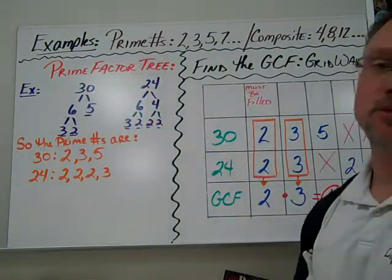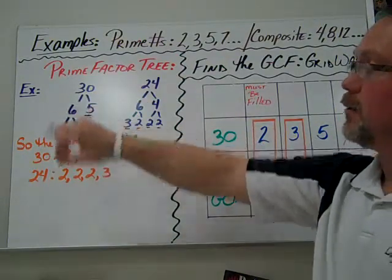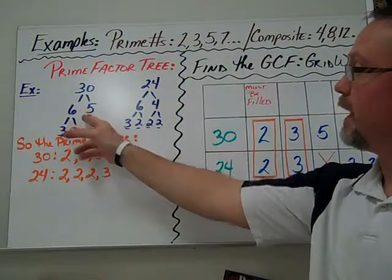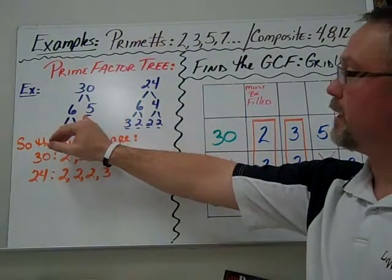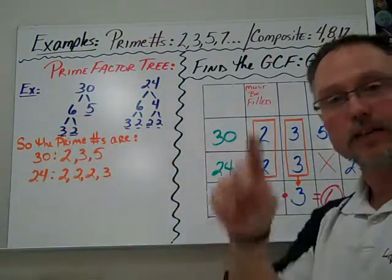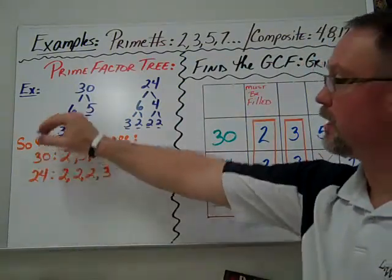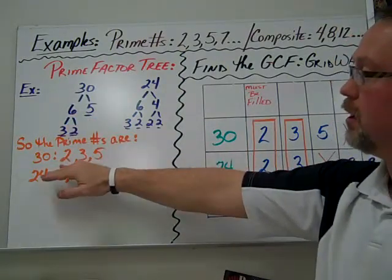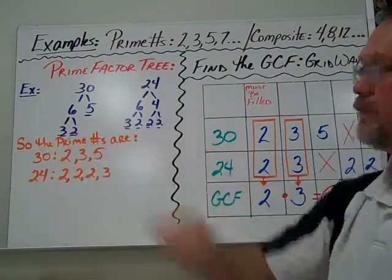We're going to also use the prime factor tree. So an example of the prime factor tree is we're going to take the number 30. We want to think of two numbers that are going to multiply to be 30. That gets us 6 and 5, and it doesn't matter which order you put them in. We can still break down 6 because 6 is a composite number. 5 is prime, so you'll see a little dash underneath the number. We have a 3 and a 2, or 3 times 2 gives us 6. So these are the prime factors, or prime numbers, which are also factors of the number 30, and that's 2, 3, and 5.